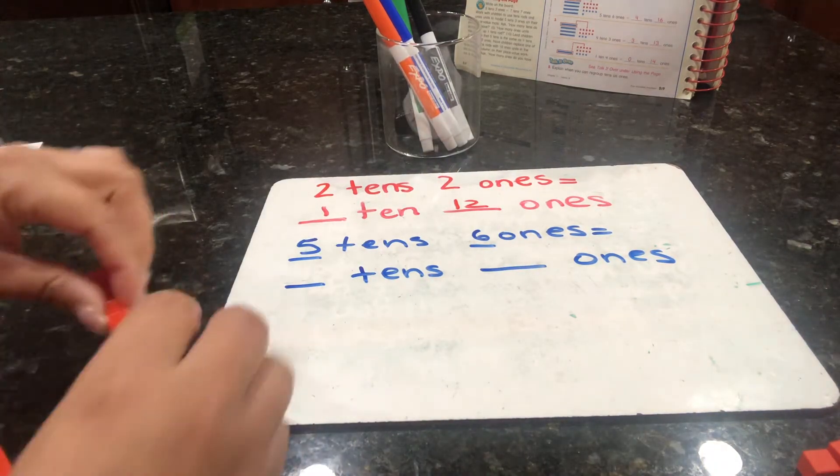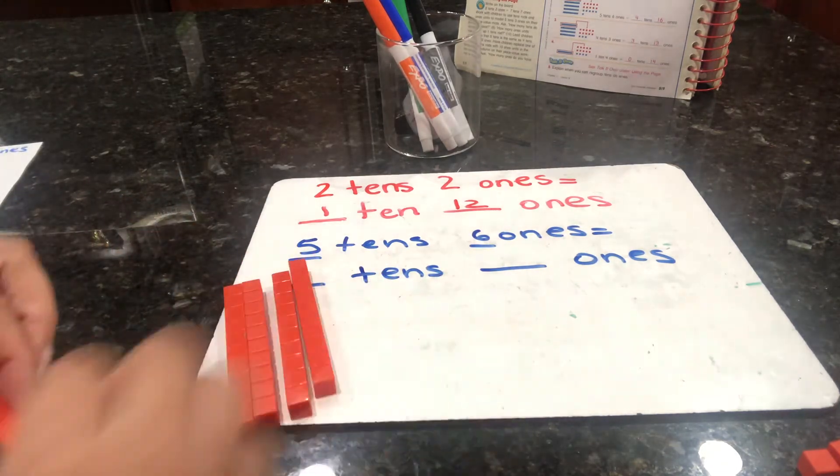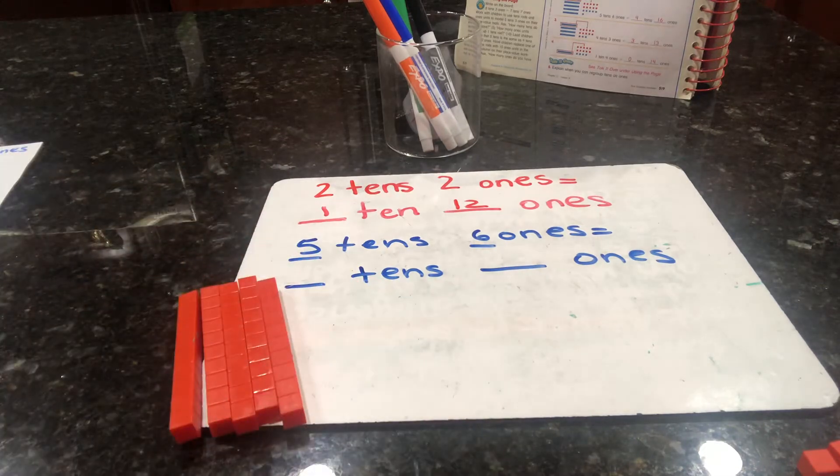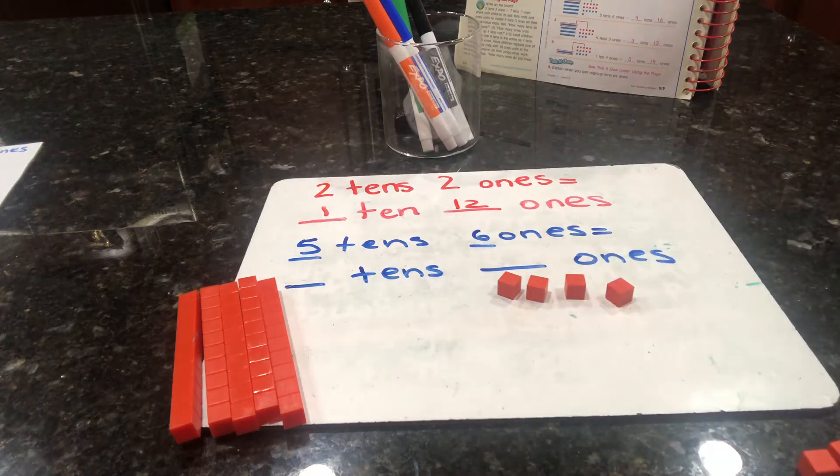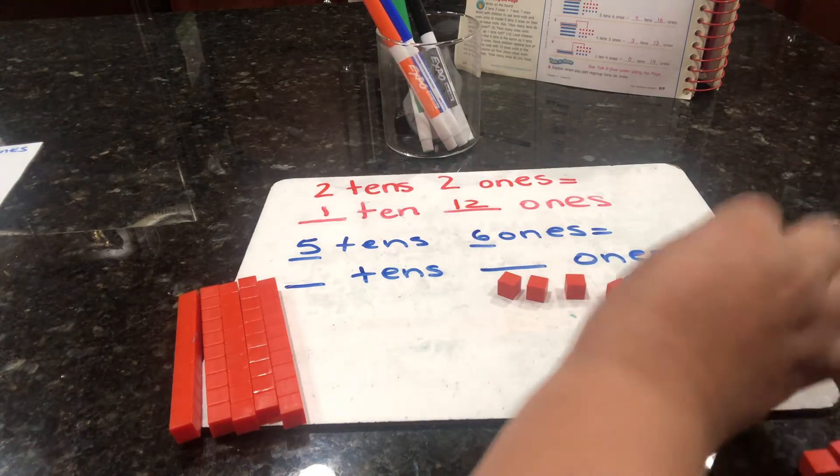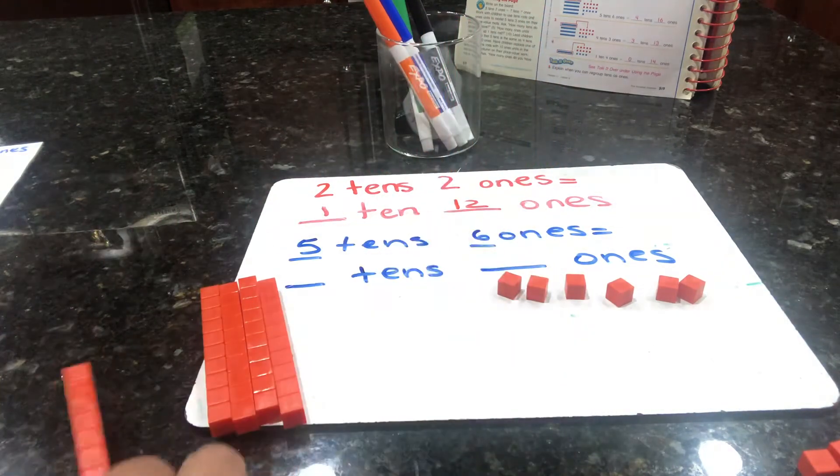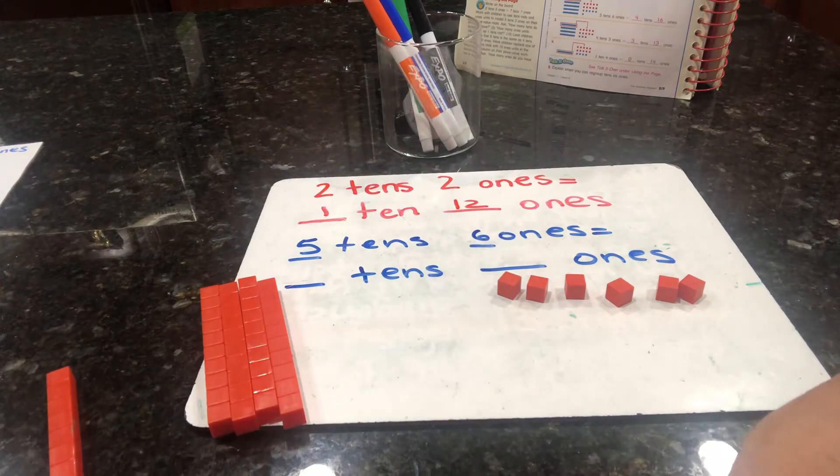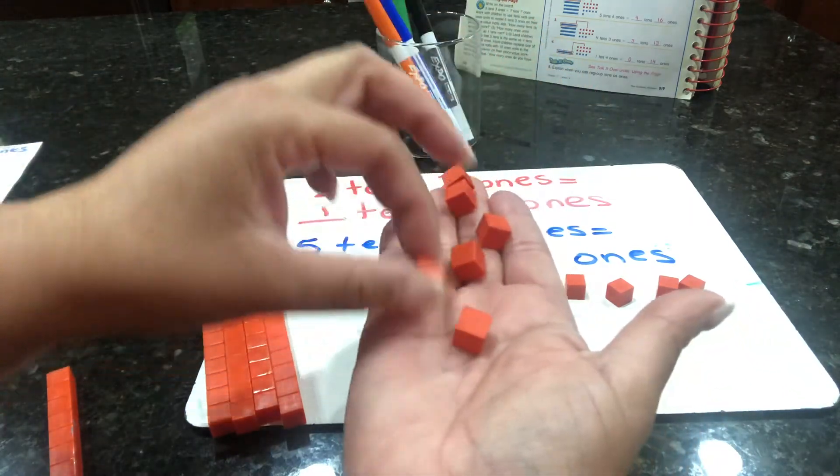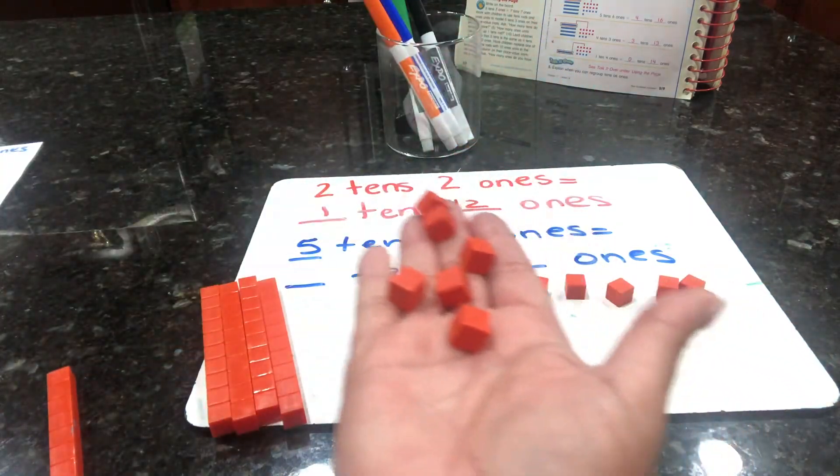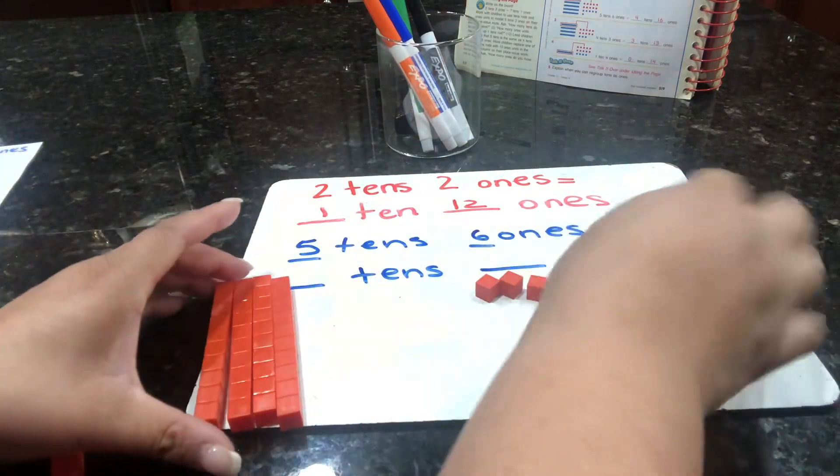Five tens—one, two, three, four, five. Six ones—one, two, three, four, five, six. We are going to trade one tens rod for ten ones units. One, two, three, four, five, six, seven, eight, nine, ten.